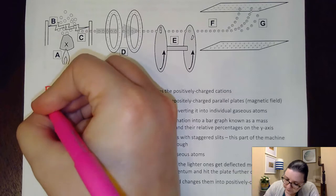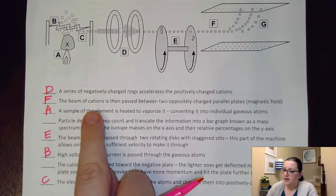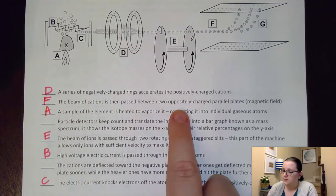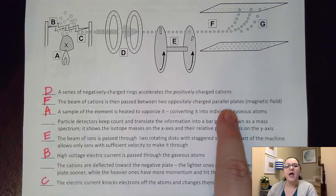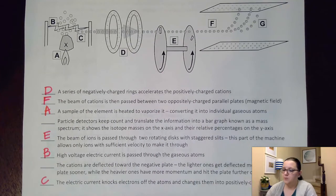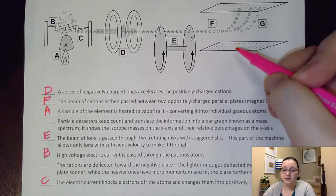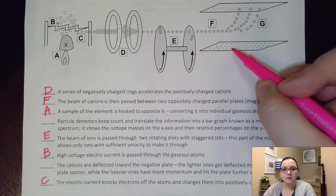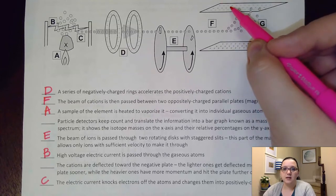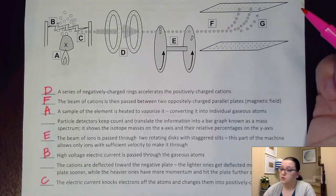Our next step is that the beam of cations is then passed between two oppositely charged parallel plates. Now, I want to talk about this step for just a moment. We have these positively charged cations that we're running through these two plates. Bottom plate has a positive charge to it. Top plate has a negative charge. Remember, like charges repel.